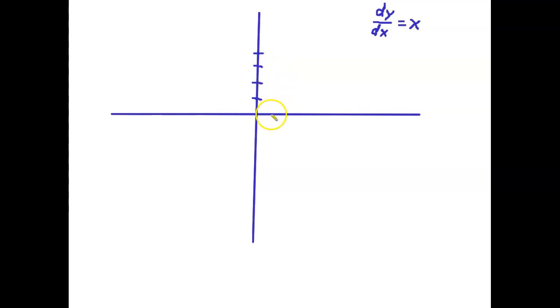Now over here, x equals one. So the slope here is like a tiny, I'm gonna draw a tiny bit of a slope that's one. Slope is one, slope is one, slope is one.